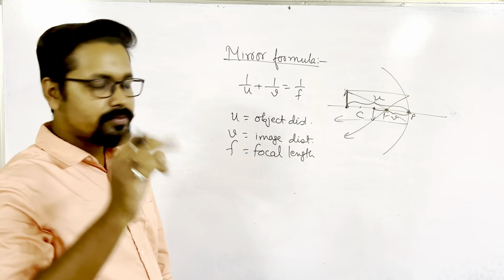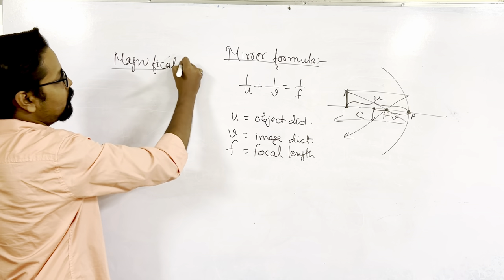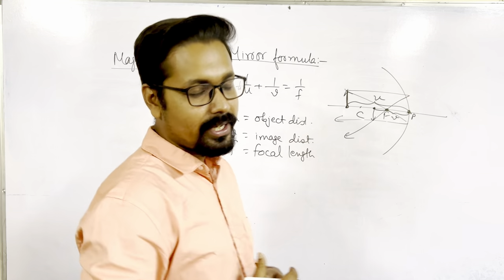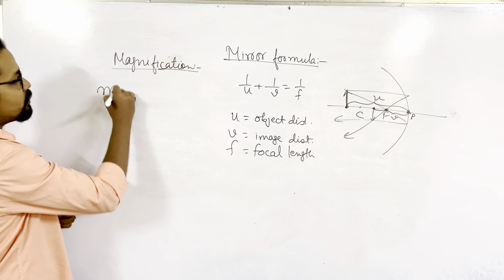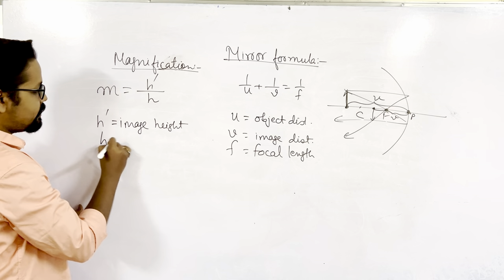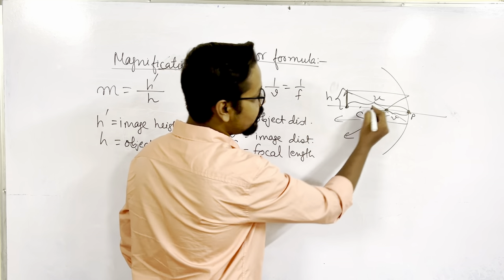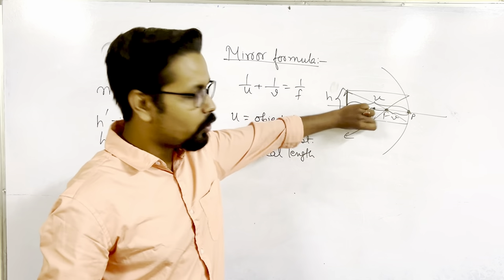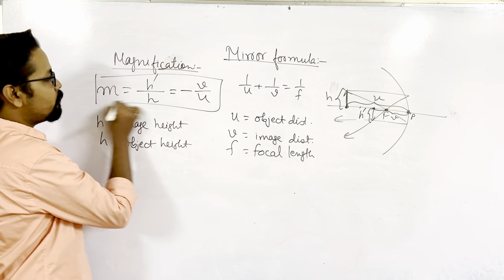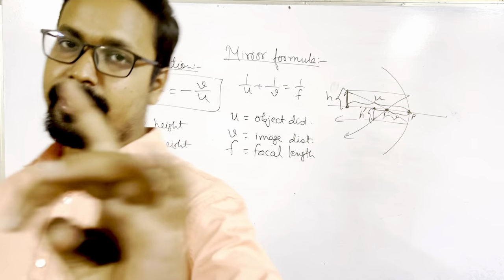The formula for magnification tells us how many times the image has been magnified. Magnification m = h'/h, where h' is the image height and h is the object height. This can also be expressed as m = -v/u. You can use either formula.